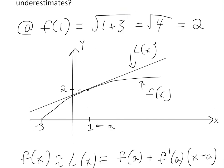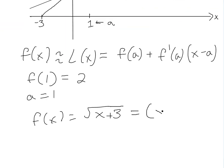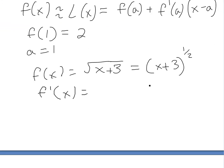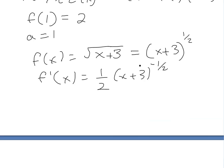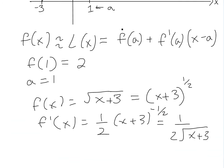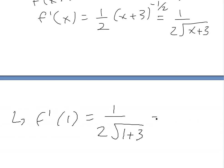We also need the derivative. We have f(x) = √(x+3), which we can write as (x+3)^(1/2) to apply the power rule. Taking the derivative: f'(x) = (1/2)(x+3)^(-1/2), which is the same as 1 over (2√(x+3)). Now plugging in a equals one: f'(1) = 1 over (2√4) = 1 over (2×2) = 1/4.